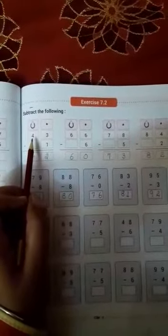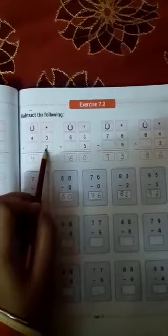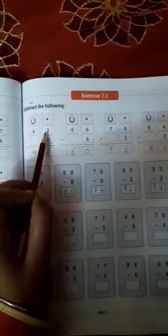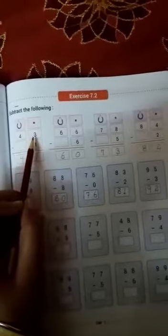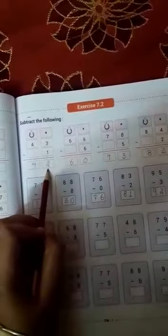Now, there are 2 digits and here 1 digit so minus. Students now, here we have 3, 3 minus 1 minus karenge to kya jayega 2.